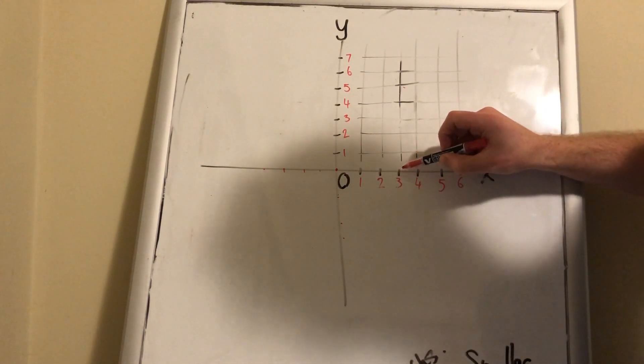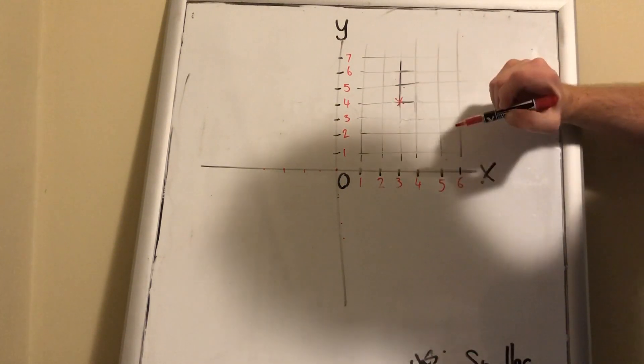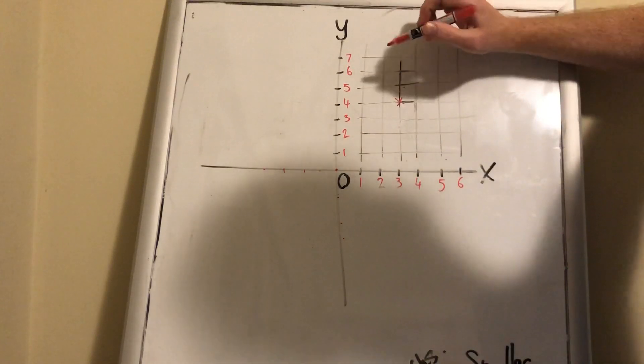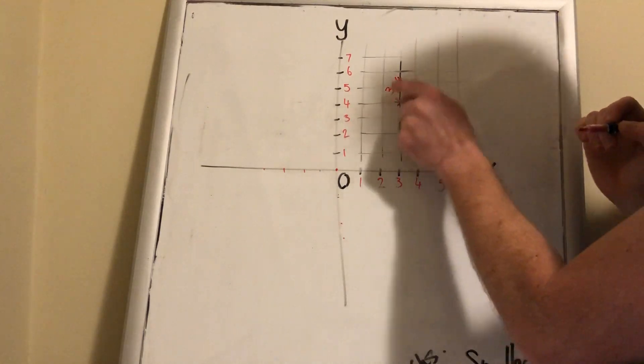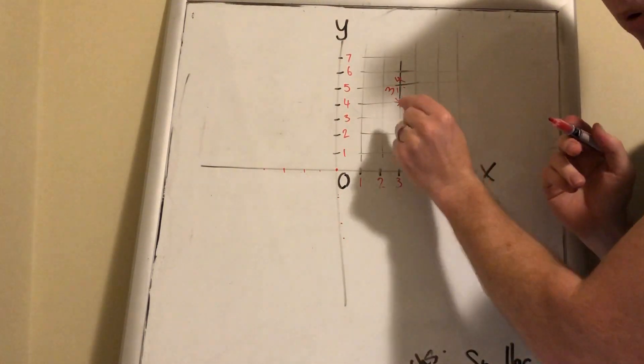So I'm here, and then 4, which is there. I go up to this point and mark it like so. That is point 3, 4. I've separated the x-axis and the y-axis with a comma, and that's important as well.